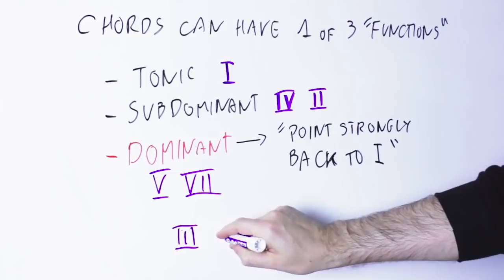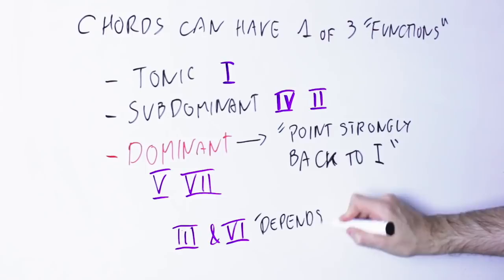But for instance, the third and the sixth chord of a key tend to be assigned to different groups depending on who you ask. So let's stay on solid ground. Dominant function chords are the fifth chord of the key and the seventh chord of the key.